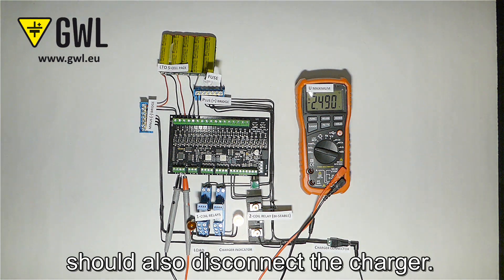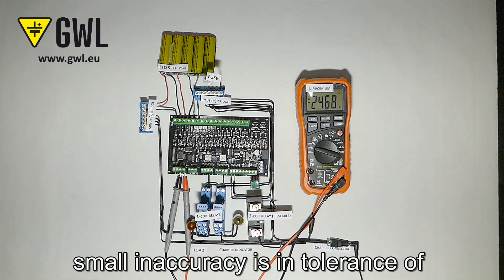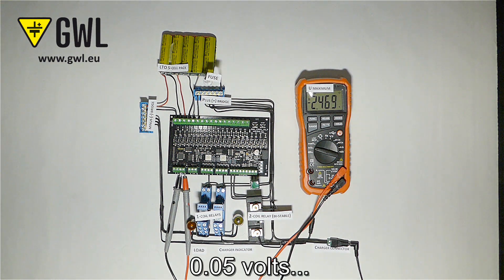Then the CPM module should also disconnect the charger. Excellent, works. Small inaccuracy is a tolerance of 0.05 volt.